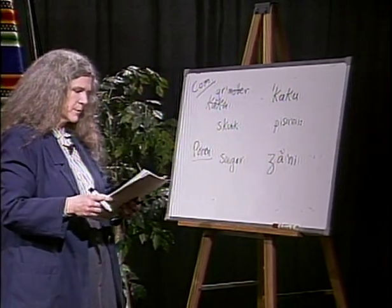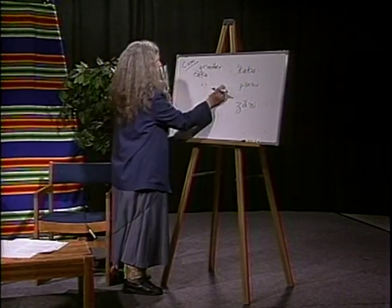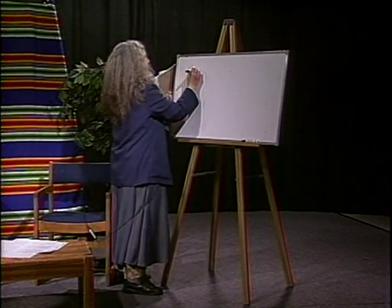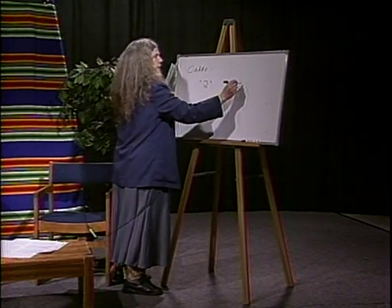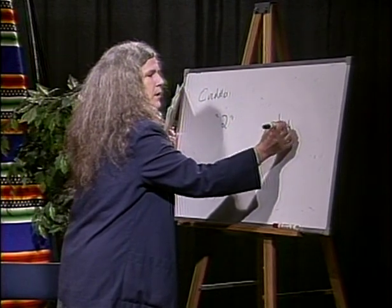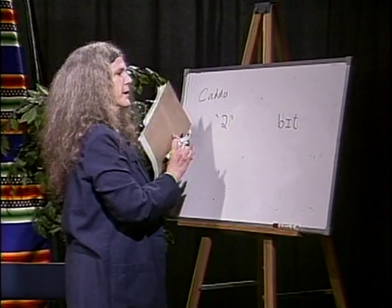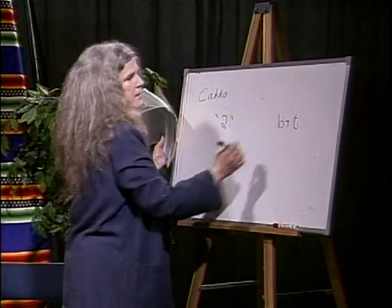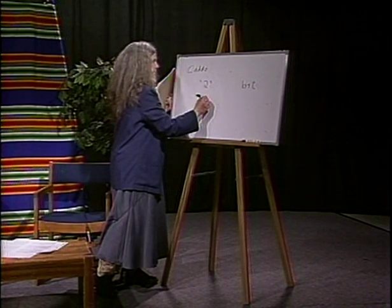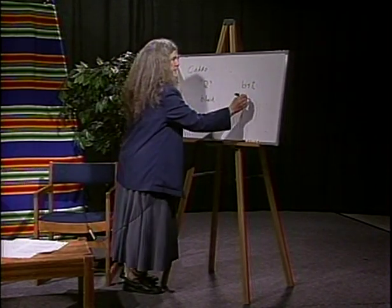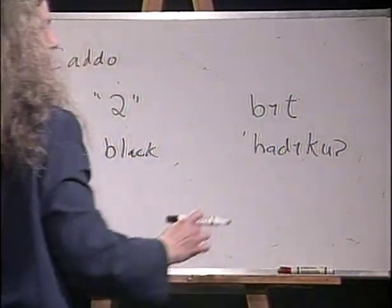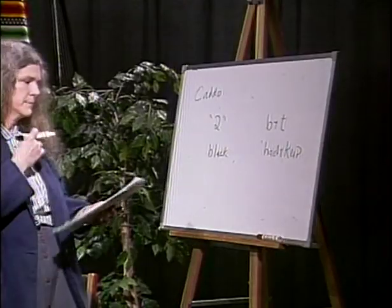And finally, let me give you an example from Caddo. The word for the number two is pronounced 'bit' — not 'beat', but 'bit', so we use a small capital I, or in strict IPA a little script i. And one more example from Caddo: 'hadiku', meaning black. Ha, accented syllable, de, ku — and there's a little glottal stop on the end, a little catch in your throat. Hadiku means black.